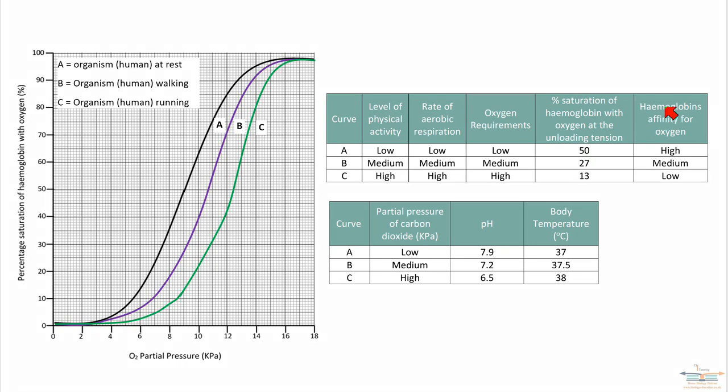So last table: hemoglobin's affinity for oxygen. You can see that it's the lowest for curve C, because curve C shows the greatest physical activity, the greatest aerobic respiration, and the greatest demand for oxygen. But it also is what produces the most carbon dioxide. When you do more aerobic respiration, the CO2 concentration increases. That lowers the affinity hemoglobin has for oxygen, so more oxygen dissociates or oxygen more readily dissociates. This table shows important links between physical activity, respiration, and oxygen requirements.